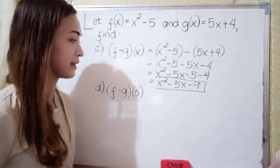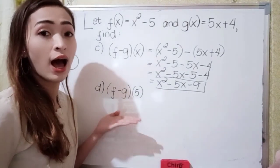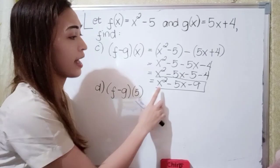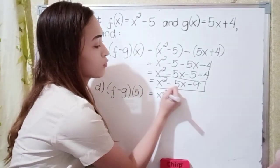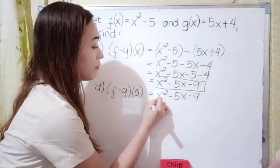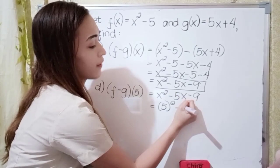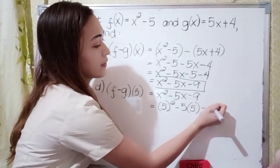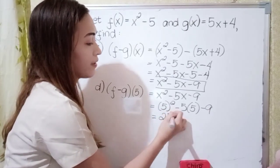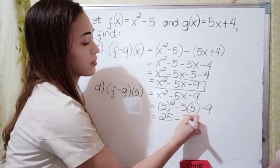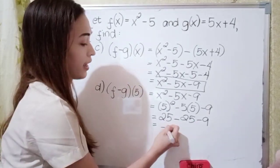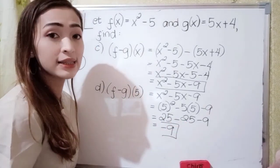For letter d, same process as the addition. We already have f minus g of x, which is x squared minus 5x minus 9. Now we substitute 5 to x, so it becomes 5 squared minus 5 times 5 minus 9. So 5 squared is 25, minus 5 times 5 is 25, and then minus 9. 25 minus 25 is 0, minus 9 is negative 9. So the answer in letter d is negative 9.